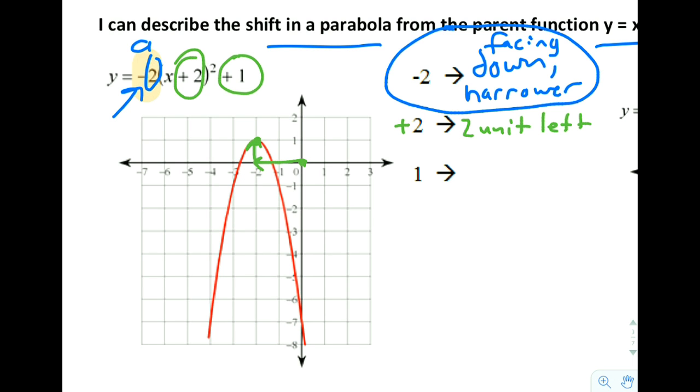We actually shift every point, not just the vertex. But the vertex is the easiest one to find on the graph, so that's the one we usually look for. But we shifted everything 2 units left. And then the plus 1 over here says we shifted everything 1 unit up.